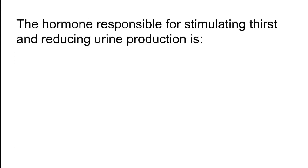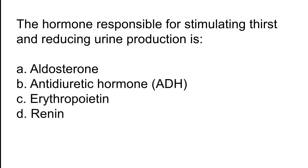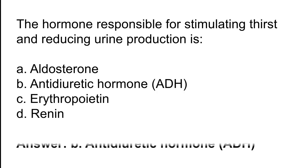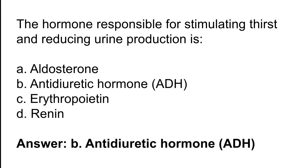The hormone responsible for stimulating thirst and reducing urine production is? Options: A) Aldosterone, B) Antidiuretic hormone (ADH), C) Erythropoietin, D) Renin. The correct answer is option B. Antidiuretic hormone (ADH) is responsible for stimulating thirst and reducing urine production.